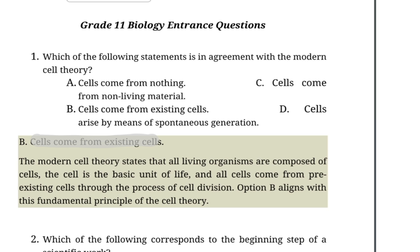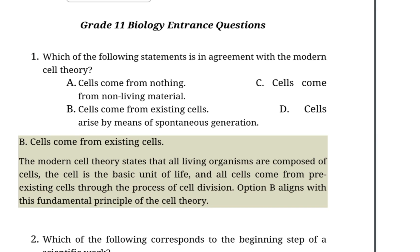The answer is B. Cells come from pre-existing cells. All living organisms are composed of cells. The cell is the basic unit of life, and all cells come from pre-existing cells. Option B aligns with this fundamental principle of cell theory.